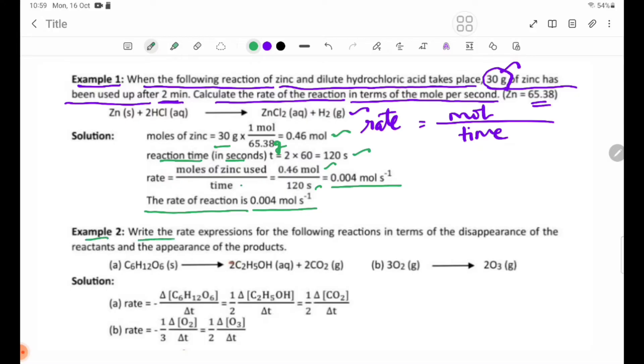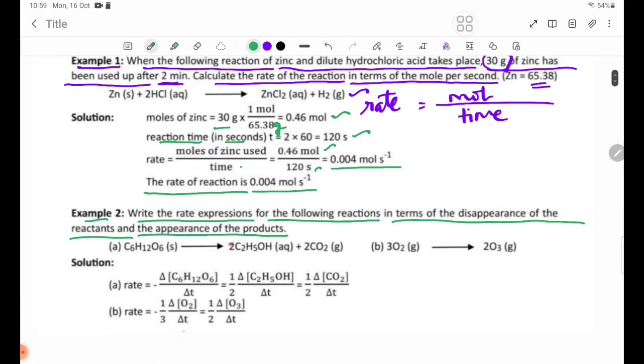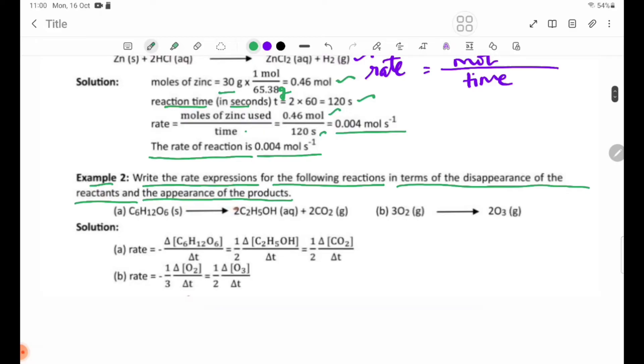Example 2: Write the rate expressions for the following reactions in terms of the disappearance of the reactants and the appearance of the products.